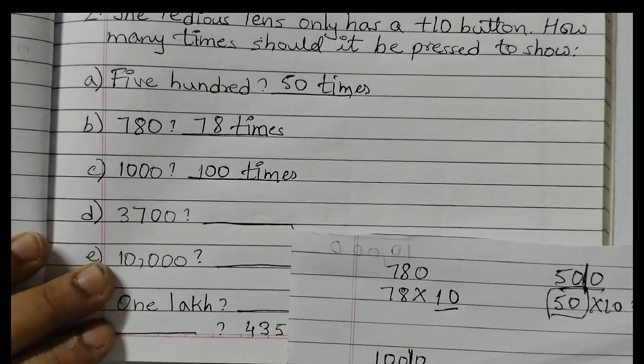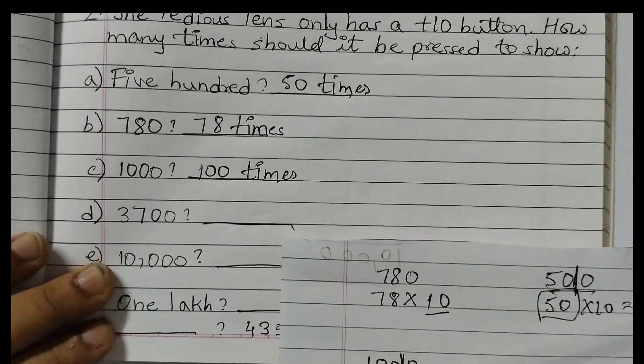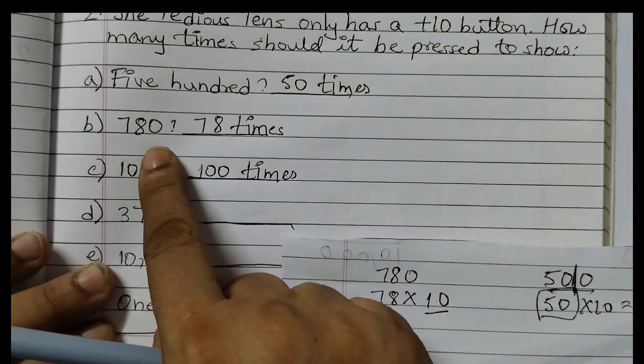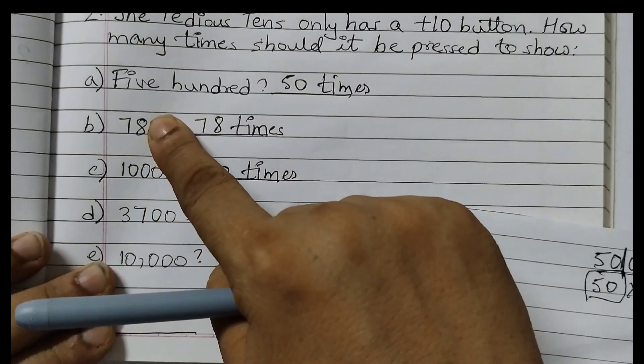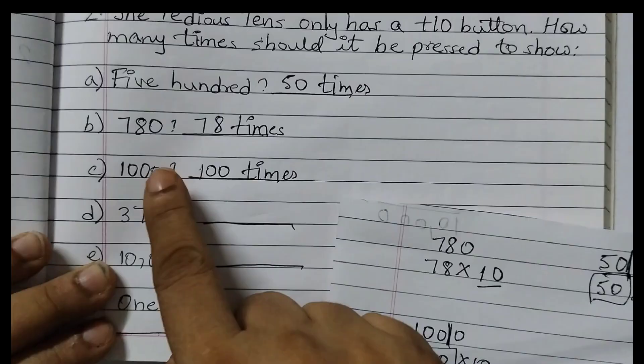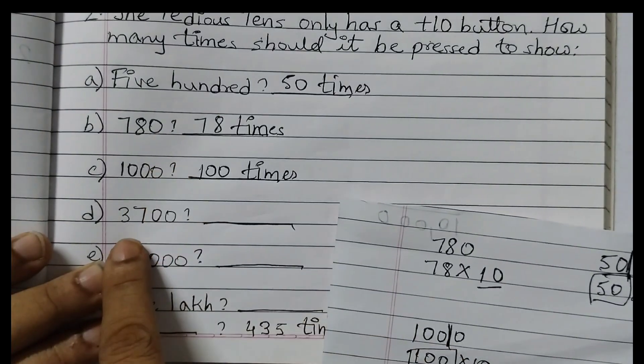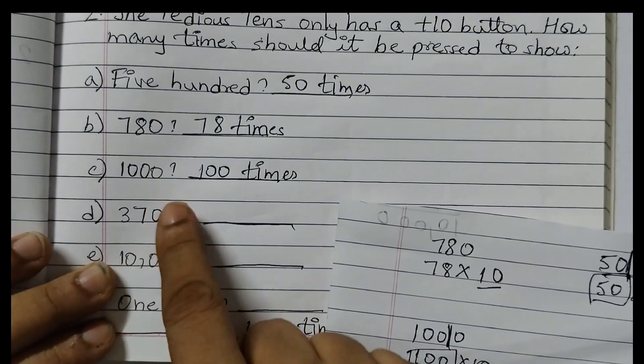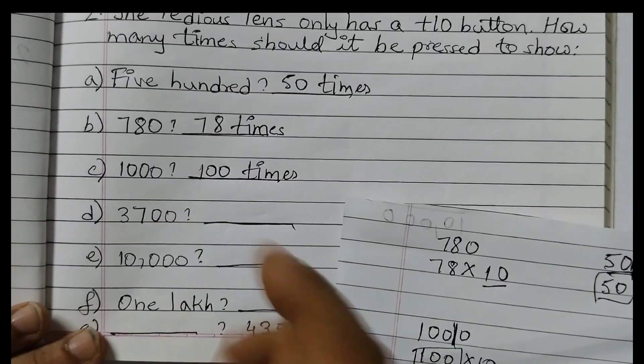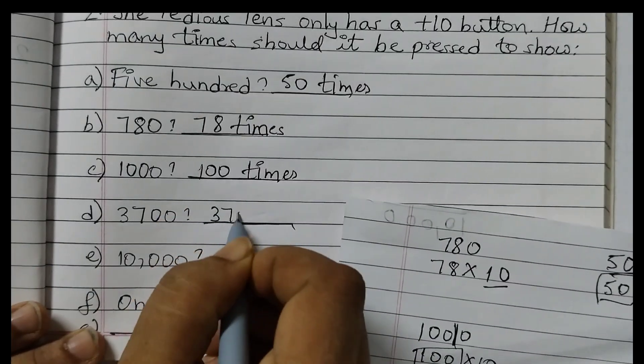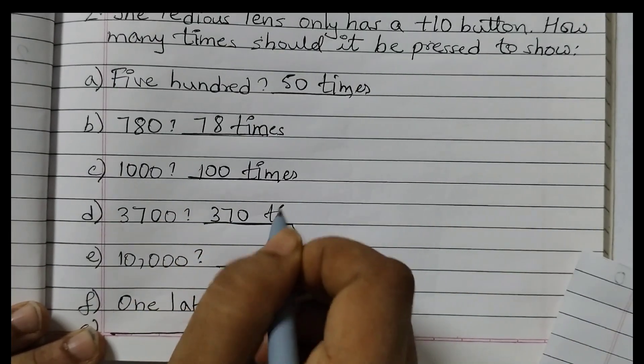You can just hide 1 zero and still you will get the answer. Like for example, here it is 780. Hide this 0, 78 is the answer. 1000, hide this 0, 100 times. 3,700, hide this 0, the answer is 370 times. Because 370 into 10 plus 10 button is 3,700.